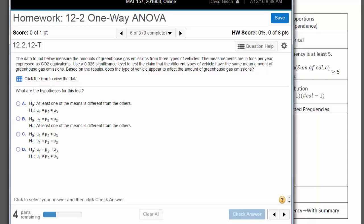We're going to do a little one-way ANOVA in this example. The data found below measures the amounts of greenhouse gas emissions from three types of vehicles. The measurements are in tons per year, expressed as CO2 equivalents.